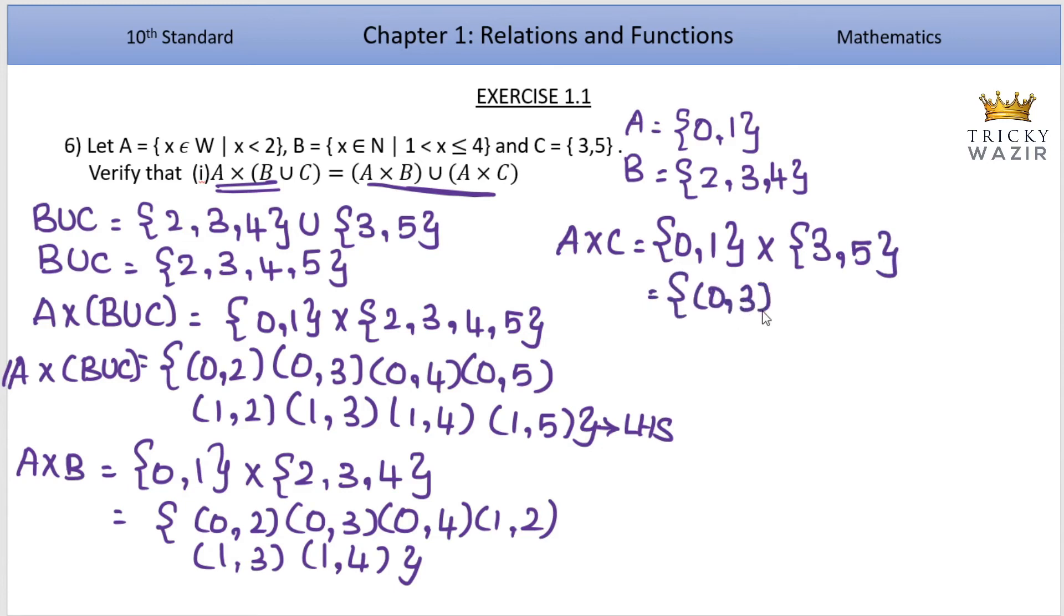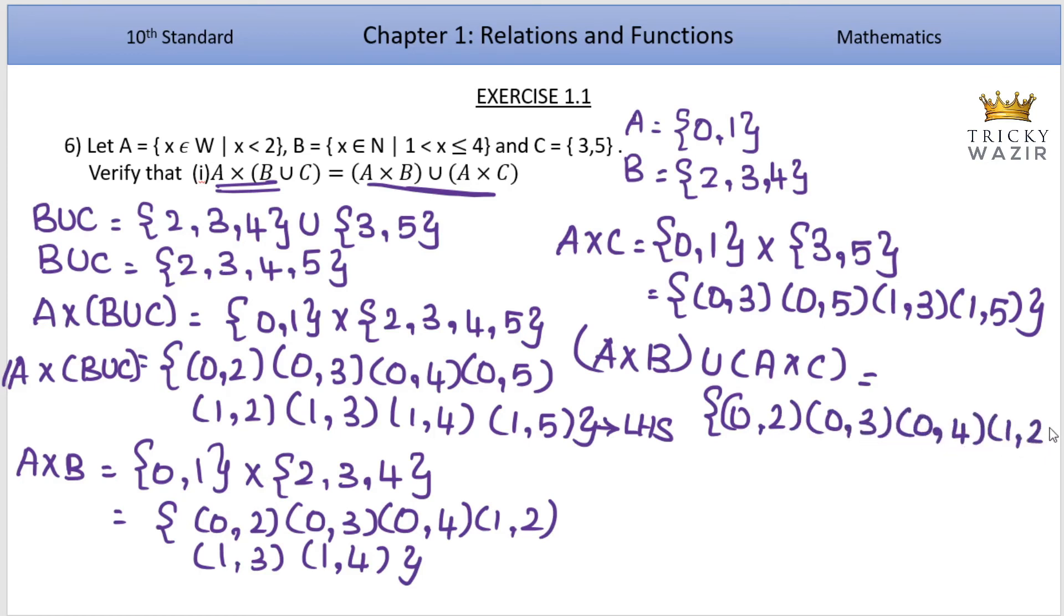RHS equals A cross B union A cross C. A cross B gives 0,2, 0,3, 0,4, 1,2, 1,3, 1,4. Union A cross C gives 0,3, 0,5, 1,3, 1,5.